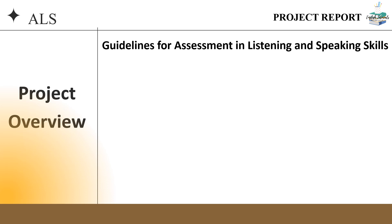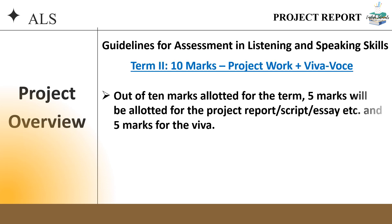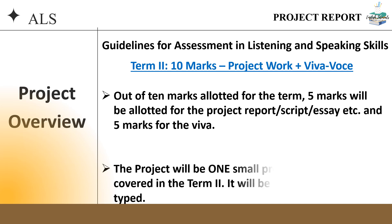Term 2 will consist of project work and viva. Out of 10 marks allotted for the term, 5 marks are for the project report, script writing or essay which you have to submit, and 5 marks are for the viva which will be based on the project submitted by you. In Term 2, you have to submit one small project work based on any one of the themes that CBSE has recommended.